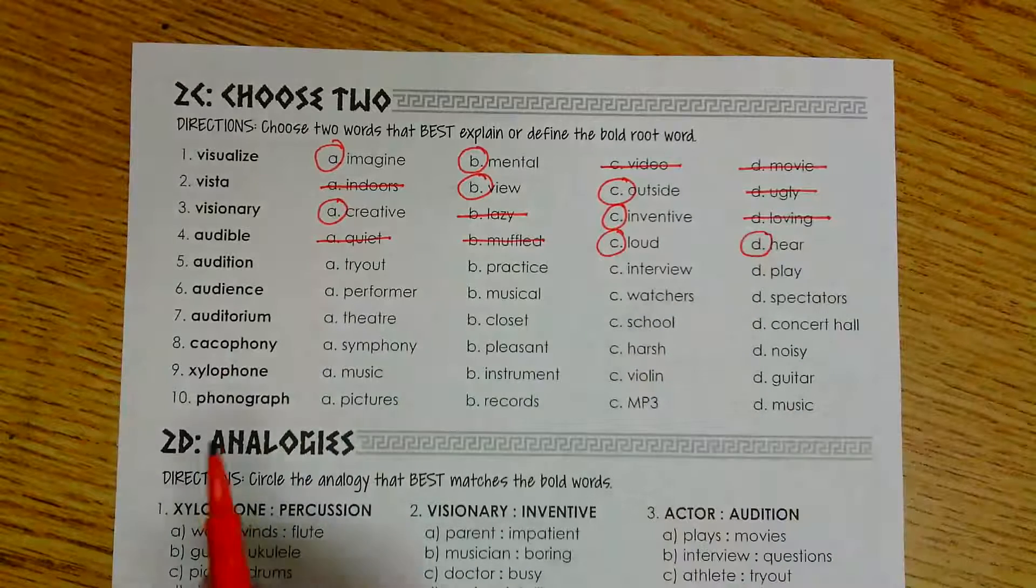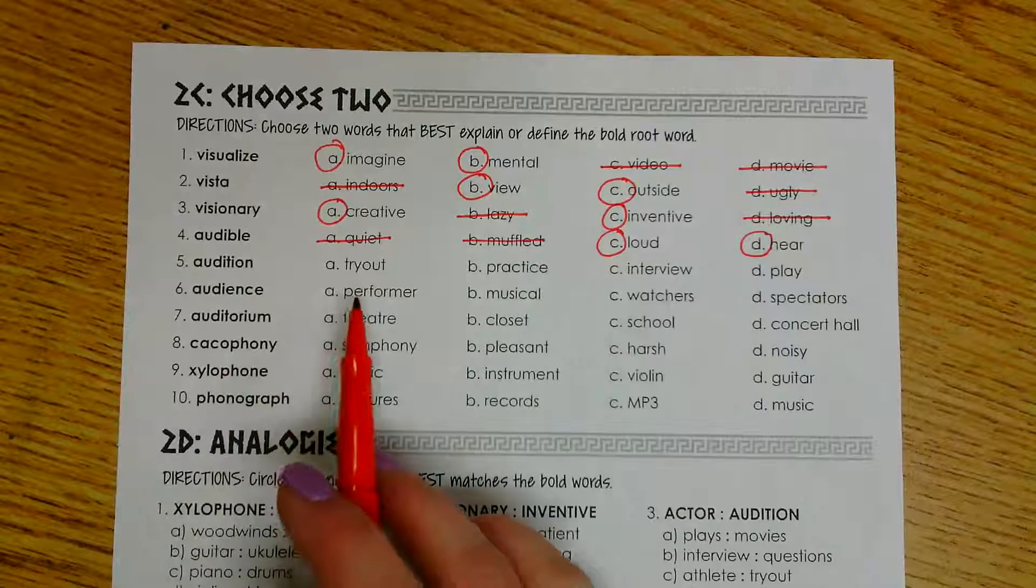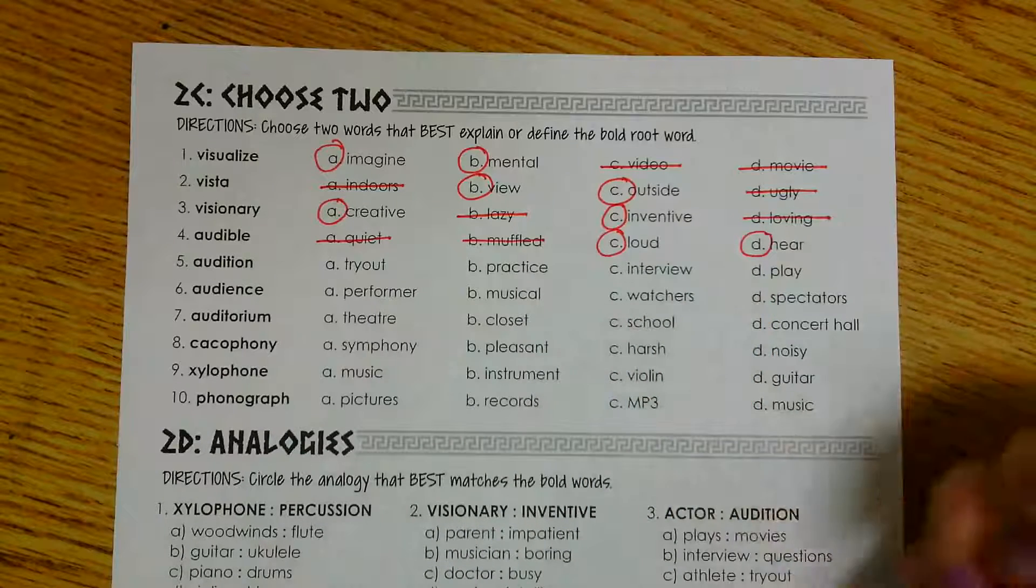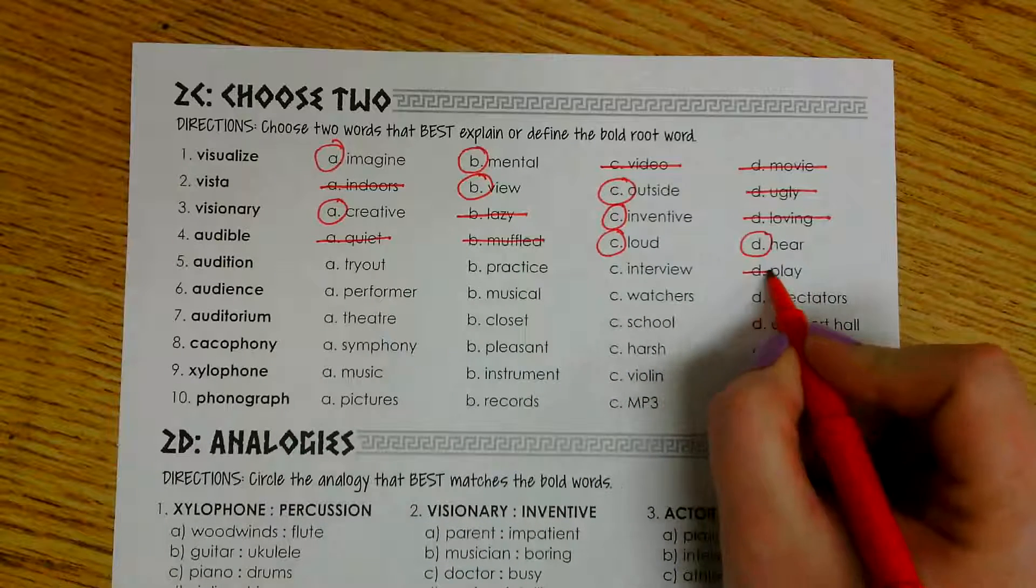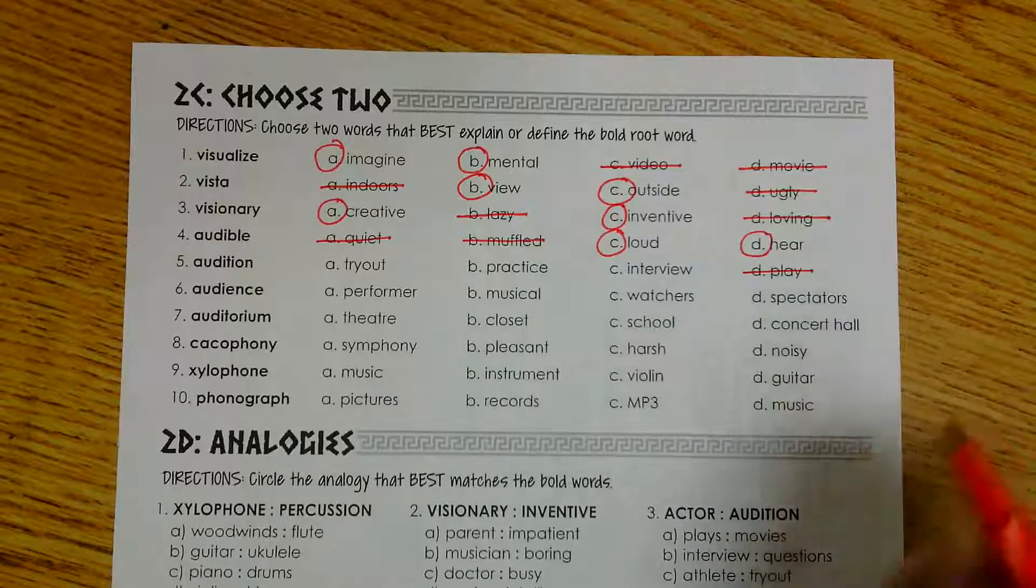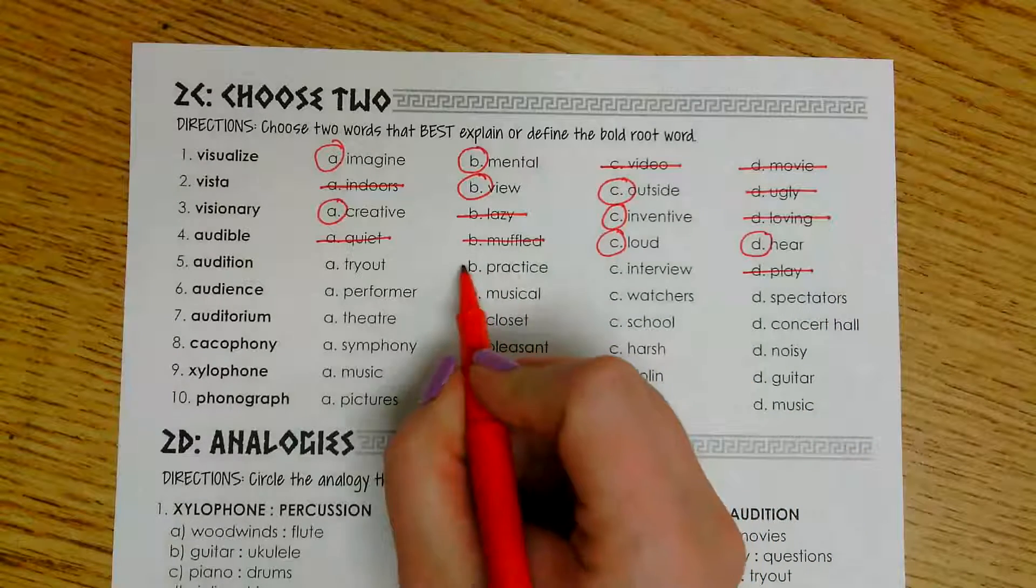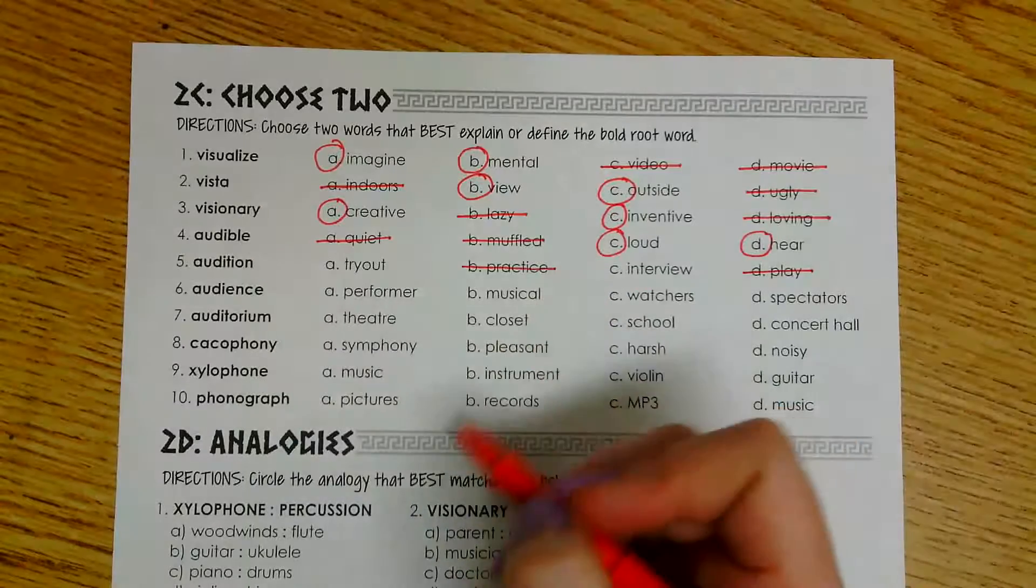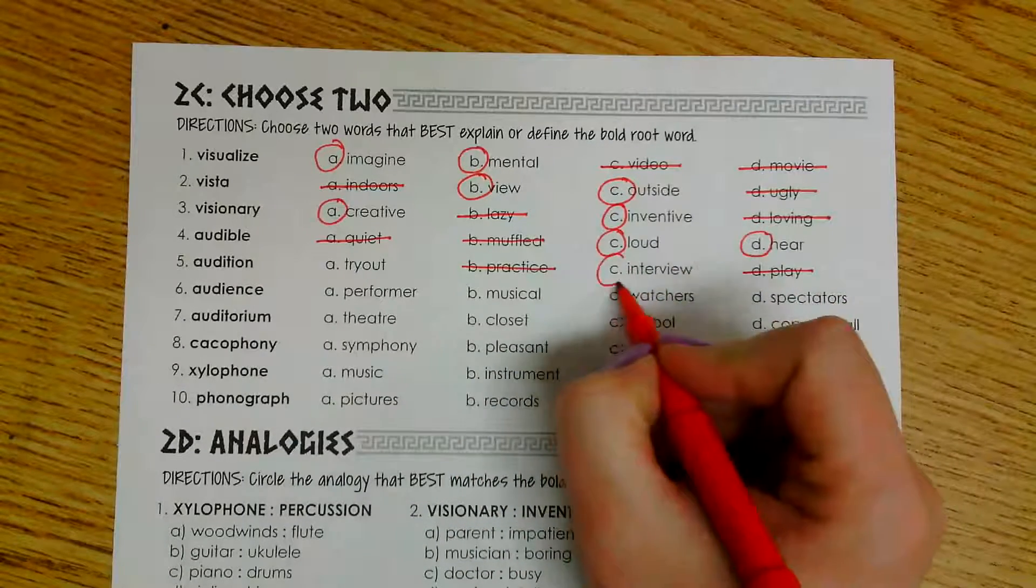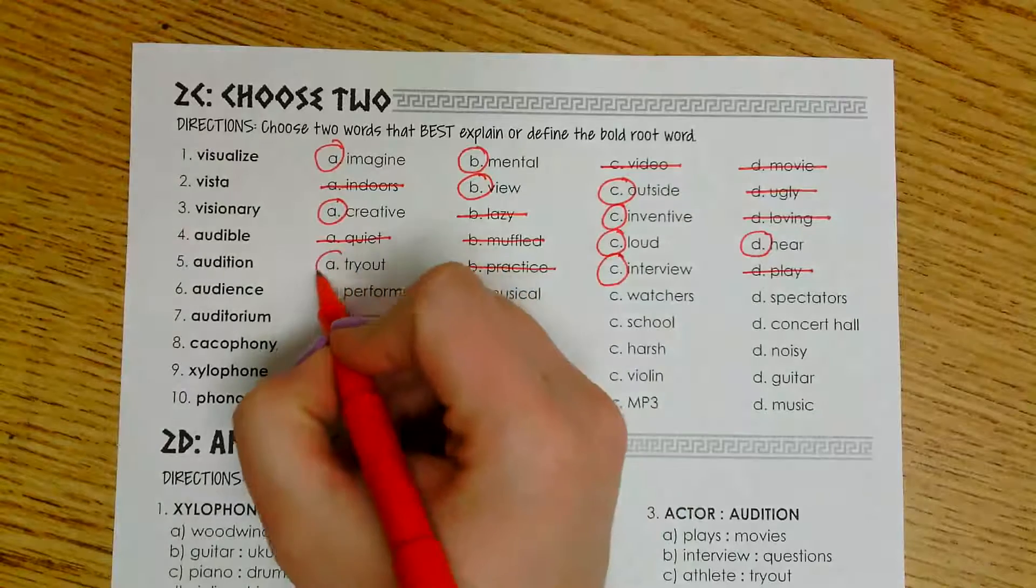Number five is audition. We have try out, practice, interview, and play. Well, I know that an audition is not the actual play. You are auditioning to be in the play. And an audition is not really practice. You've already practiced or rehearsed before you audition for something. So that leaves me with interview and try out.